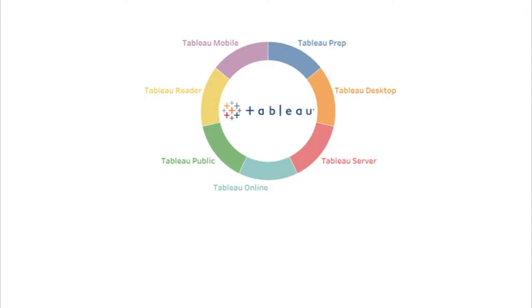Hi, I'm Mervyn from Datasomatics. Today we'll be looking into Tableau's product portfolio. There are seven major products that Tableau offers for business intelligence and data visualization. I'll be giving you a quick overview of each of them.